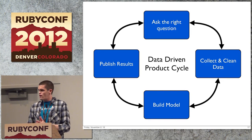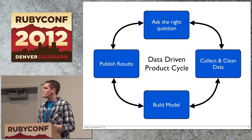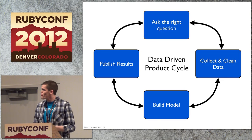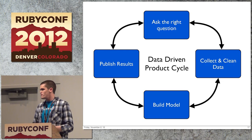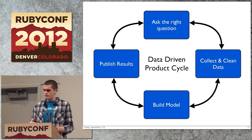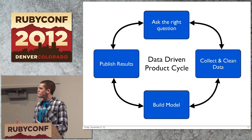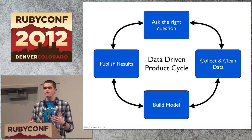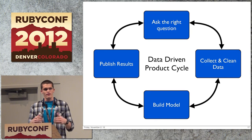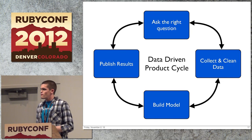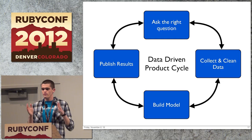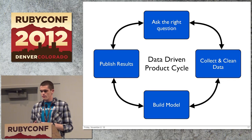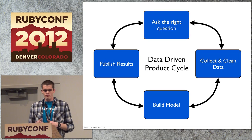Building a data-driven product comes down to a cycle with four major steps: asking the right question, collecting and cleaning your data, building the predictive model, and publishing the results. The important thing is this is not a linear flow — it's not waterfall. Building data-driven products is just like building every other product, like Rails web apps — we all do the Agile thing. But it's very hard to get out of that traditional waterfall model, especially coming from an enterprise background using traditional business intelligence tools like Teradata.